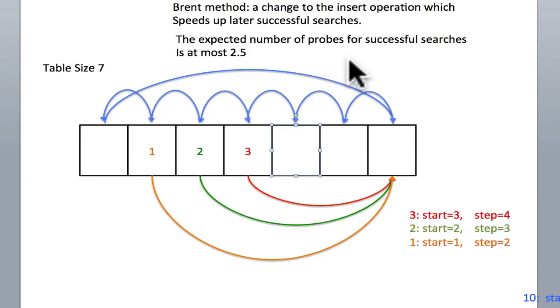This is a short explanation for Brent method and how it works. Suppose we have this hash table where the table size is 7, and we have the first three elements that we put in here are 3, 2, and 1.